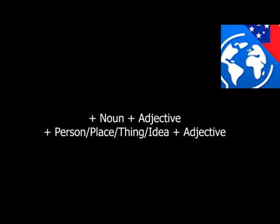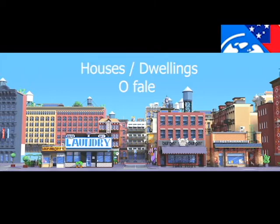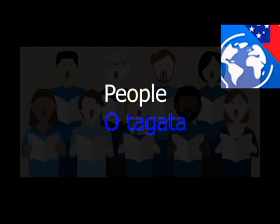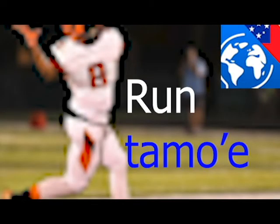The sentence structure for nouns begins with the letter O. If you have a person, place, or thing, start the sentence with O. For example: o kavale, o fale, o tangata, o komoe.